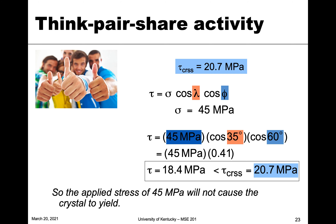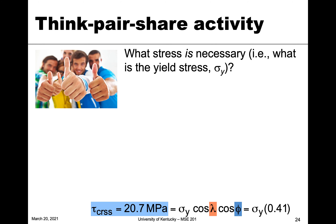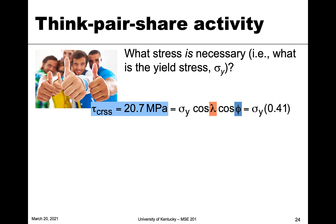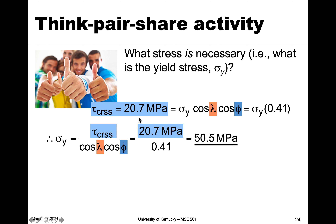The next part of the question is: what stress will cause yielding? For that, we work backwards. We know the critical resolved shear stress of 20.7 and we plug it into Schmid's law and solve for sigma. We call it sigma y because at this point it is in fact the yield stress — this is the point at which yielding occurs. So we're solving for yield stress using the same angles.